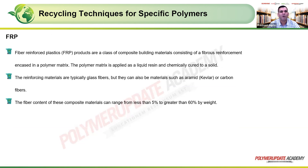FRP (Fiber-Reinforced Polymer) refers to a class of composite building materials consisting of fibrous reinforcement encased in a polymer matrix. The polymer matrix is applied as a liquid resin and chemically cured to a solid. Reinforcing materials are typically glass fibers but can also be Kevlar, aramid, carbon, or boron fibers.